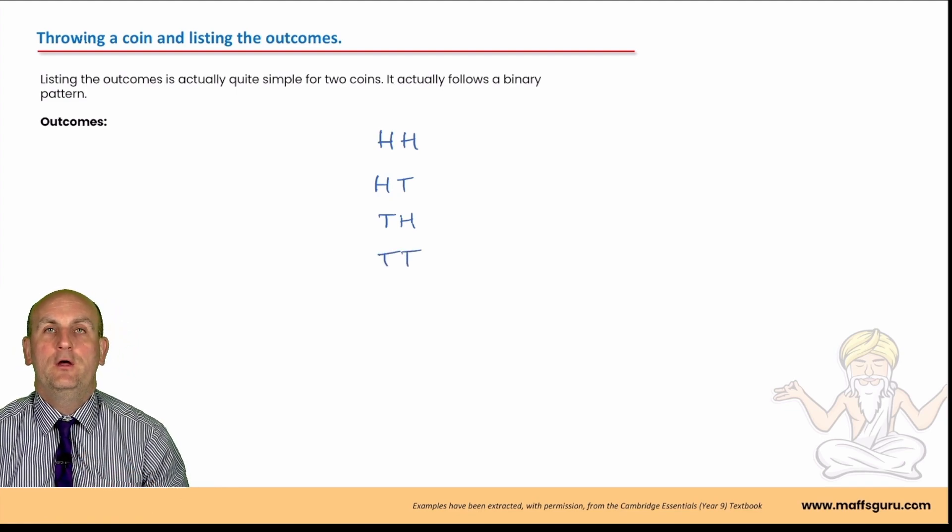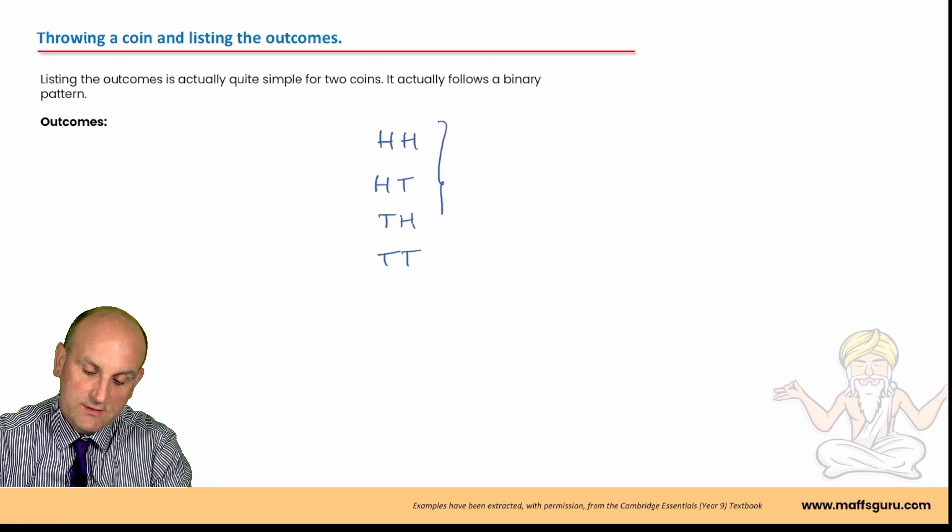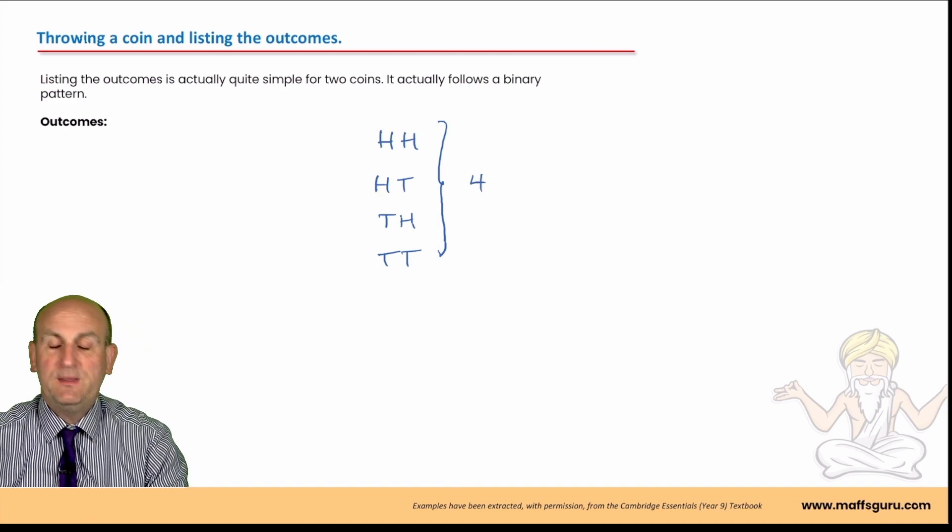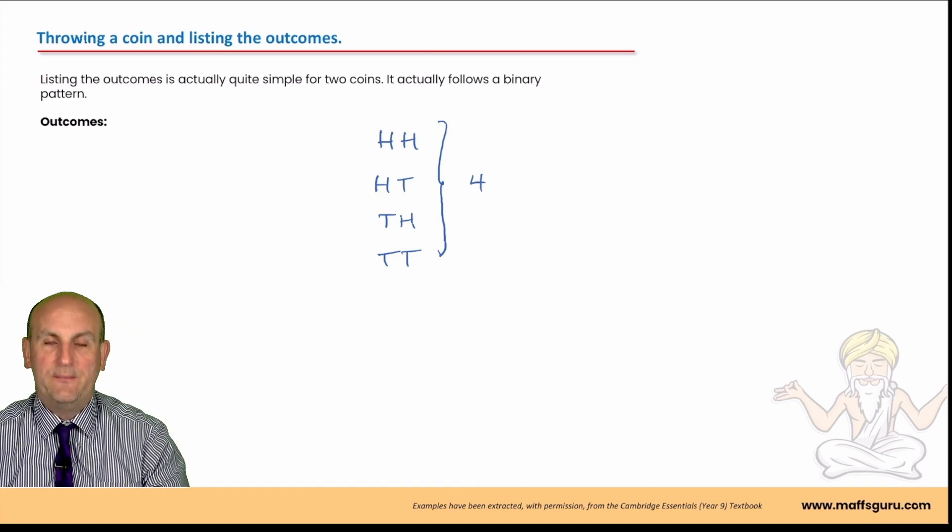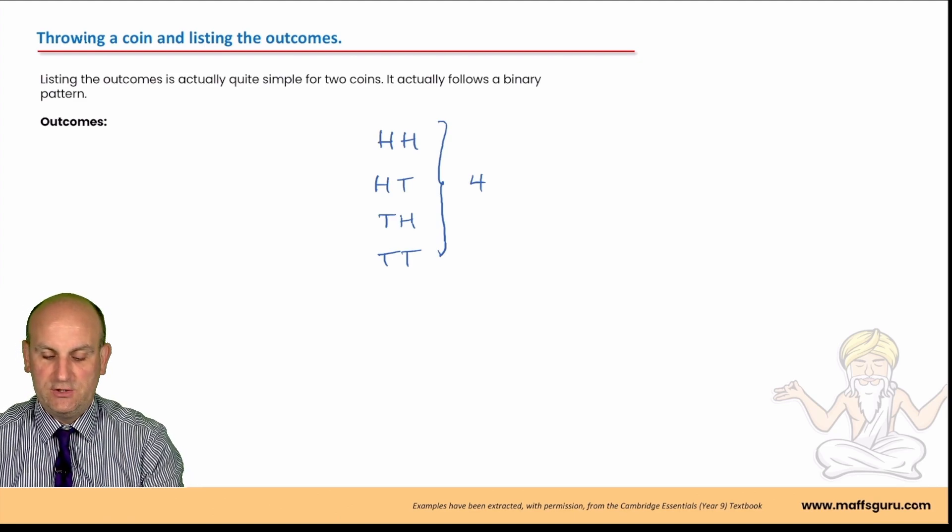I emphasize the word first there because order is important. The next way could have been a tail followed by a head or a tail followed by a tail. And believe it or not, there are no other outcomes that are possible. There are four possible ways of doing it.